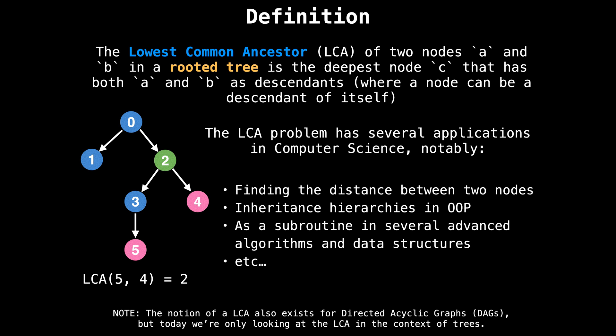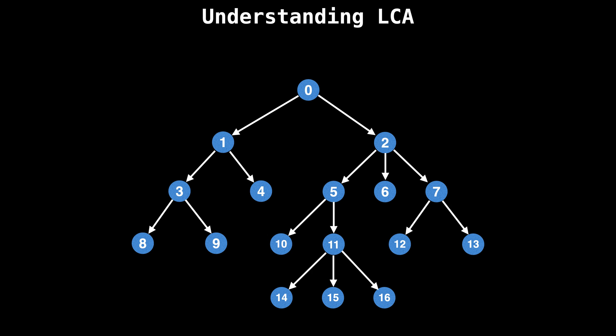The lowest common ancestor problem is found in numerous places in computer science, most notably when trying to find the distance between two nodes in inheritance hierarchies for object oriented programming and inside the subroutines of several advanced algorithms and data structures. It's also worth mentioning that while in this video we're going to be covering finding the lowest common ancestor for trees, there's also the notion of a lowest common ancestor but for directed acyclic graphs. Let's have a closer look at what the lowest common ancestor is to make sure that we're both on the same page. I'm going to show you pairs of nodes and you're going to try and find which node in the tree is the lowest common ancestor.